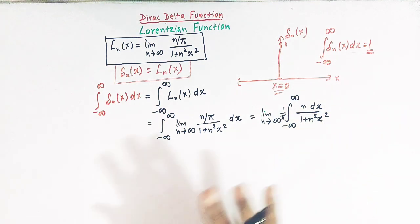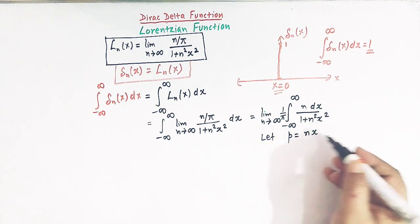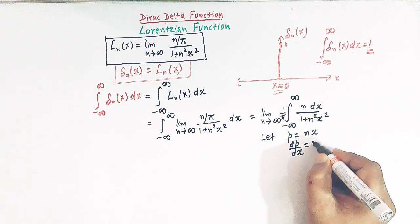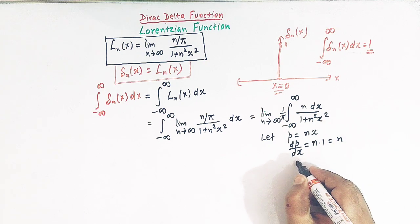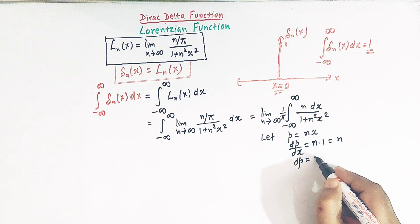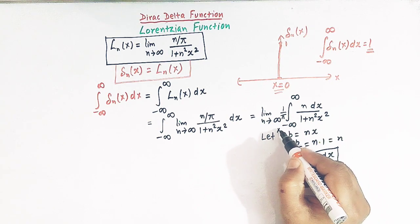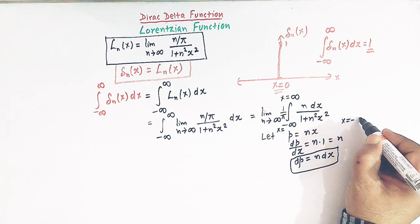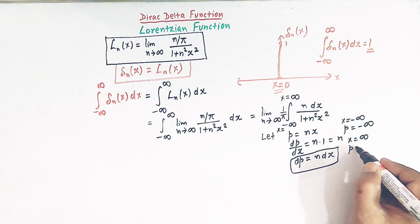To solve this integral we use the method of substitution. Let p equal nx, so dp over dx equals n, meaning dp equals n dx. The limits of integration vary from x equal to minus infinity to x equal to infinity, so when x is minus infinity, p is also minus infinity, and when x is infinity, p is also infinity.